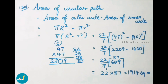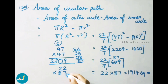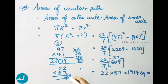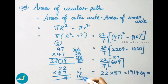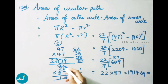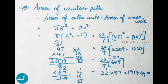Now we multiply 22 into 87. Vertically: 7 × 2 = 14, write 4 carry 1. Cross multiply: 7 × 2 = 14 and 8 × 2 = 16; 14 + 16 = 30, plus 1 = 31, write 1 carry 3. Vertically: 8 × 2 = 16, plus 3 = 19. So 22 × 87 = 1914 square meters.